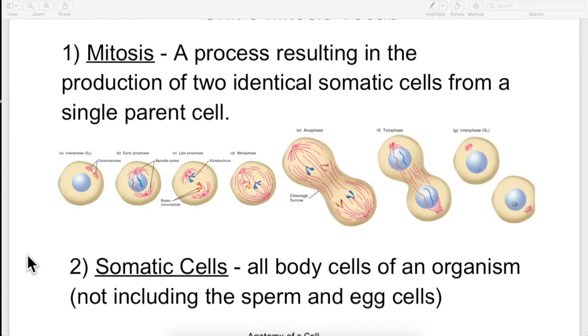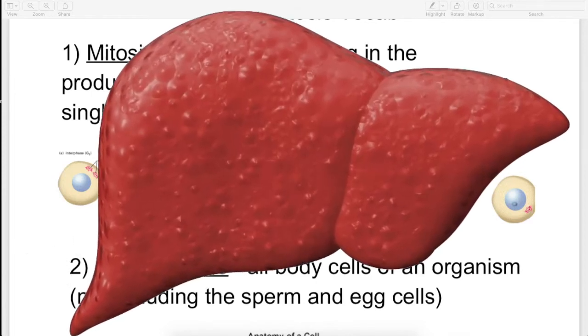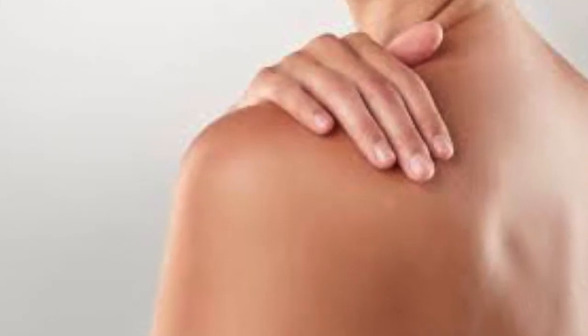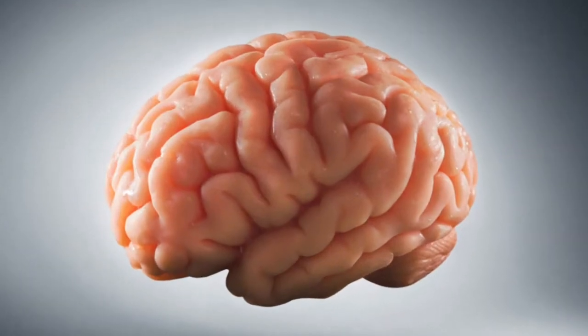They have their own name. They're called gametes. Every other cell in your body are called somatic cells. So your liver cells, they're somatic cells. Kidney cells, somatic cells. Skin cells, somatic cells. Brain cells, somatic cells. You get the idea.